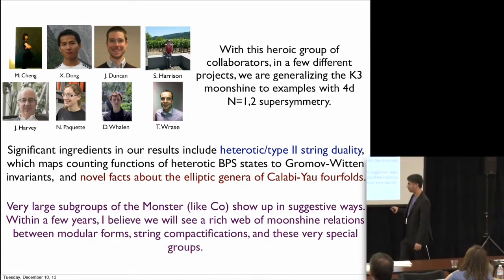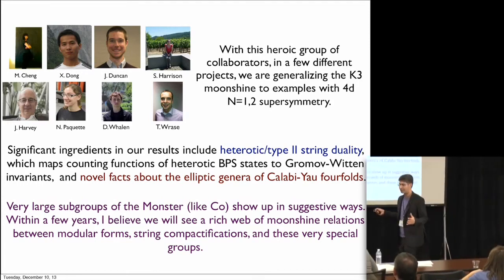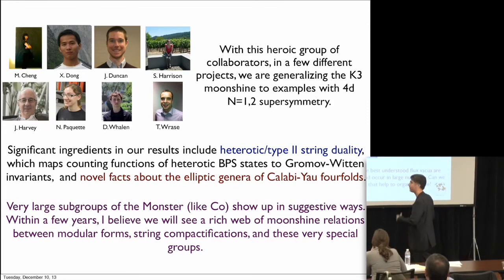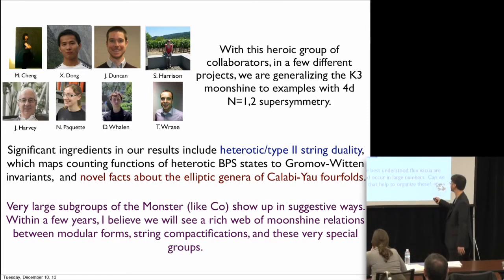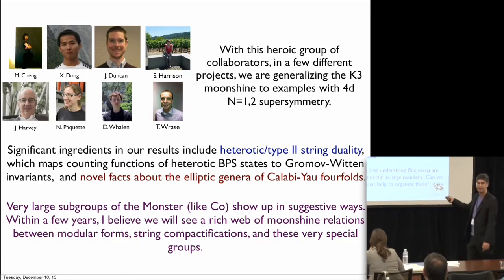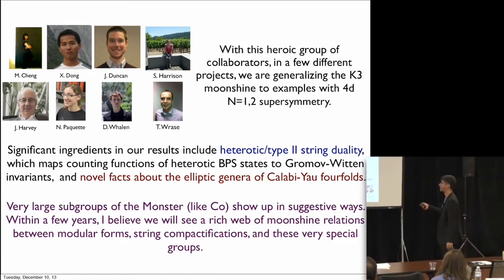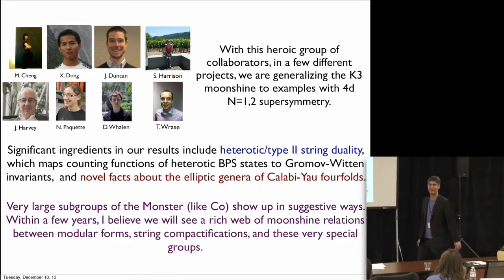We're still working on making a precise conjecture. But my belief is that in the next few years we'll see a very rich web of moonshine relations between modular forms, Calabi-Yau geometries, and these very special groups. What does it have to do with physics? Well, maybe it's classifying and giving us some structure on the simplest avatars of this picture. Or if not, at least it's math. Thank you.